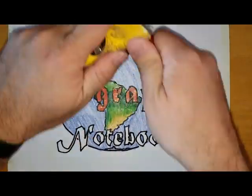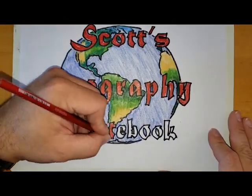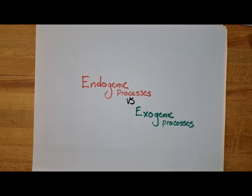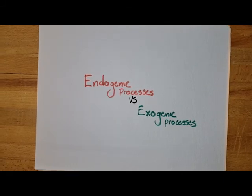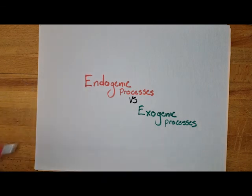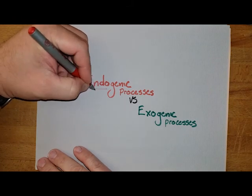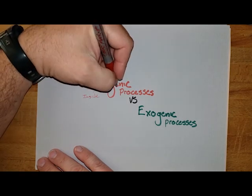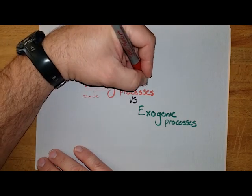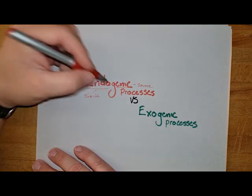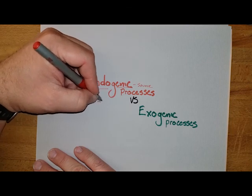Scott's Geography Notebook. As we're thinking about the surface of the earth and changing that surface, there are going to be two major processes: endogenic processes and exogenic processes. 'Endo' means inside, and 'genic' means the source — so endogenic processes have their source on the inside, in this case inside the earth.